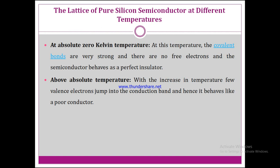At absolute zero Kelvin temperature, the covalent bonds are very strong and there are no free electrons available. Due to that, the semiconductor behaves as a perfect insulator. Whereas above absolute zero temperature, with the increase in temperature, few valence electrons jump into the conduction band and hence it behaves like a poor conductor.